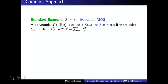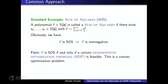Therefore, one is interested in finding sufficient conditions to certify non-negativity which are easier to check — so-called certificates of non-negativity. The standard example is sums of squares: if you can write a polynomial as a sum of squared polynomials, then this polynomial is non-negative. Even better, one can test if a polynomial is a sum of squares and find SOS decompositions via semi-definite programming, which is a convex optimization problem that can be seen as a generalization of linear programming.